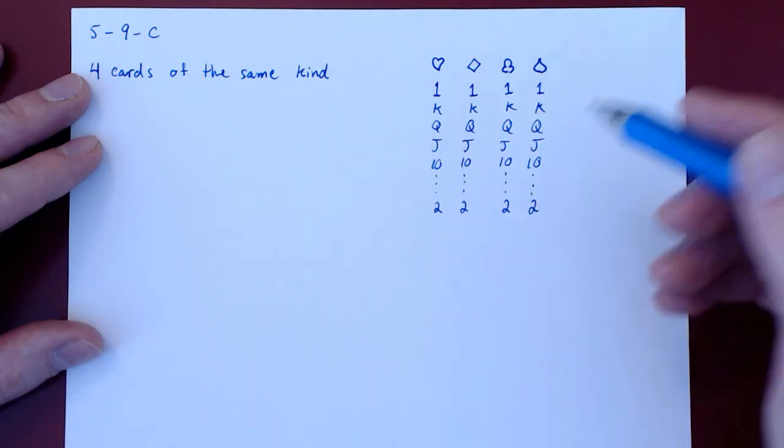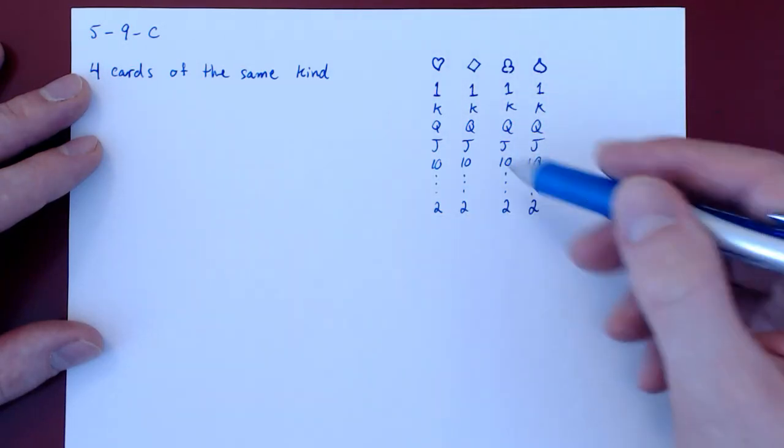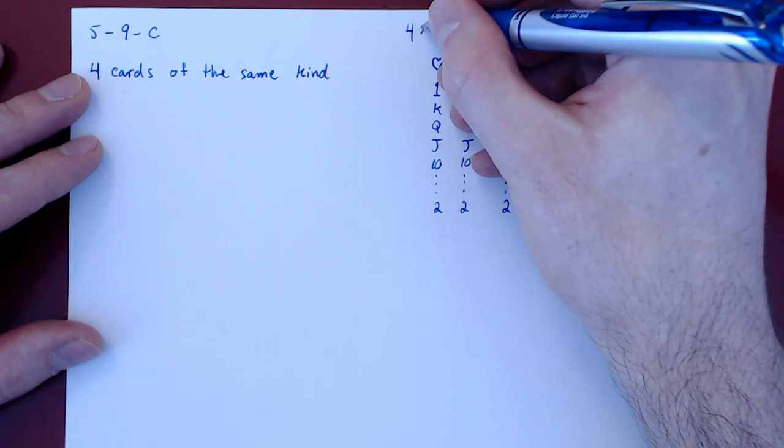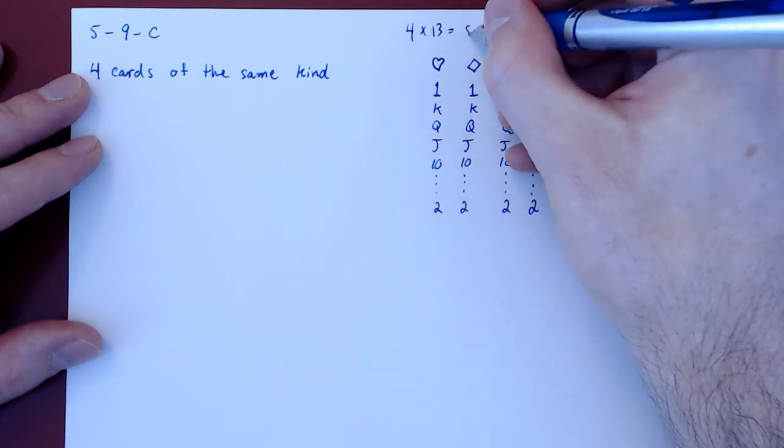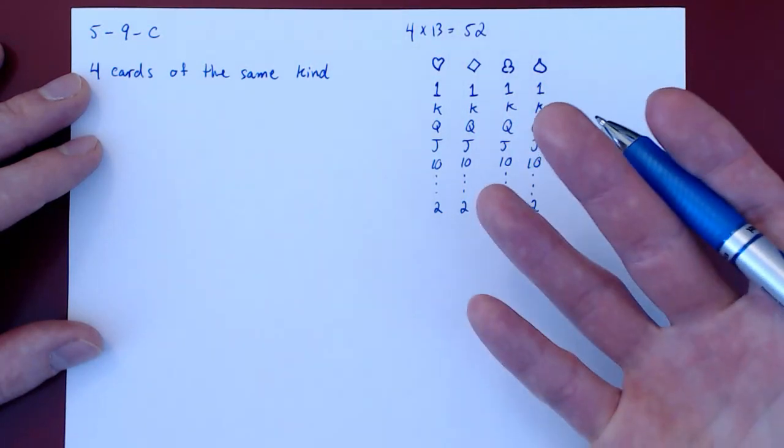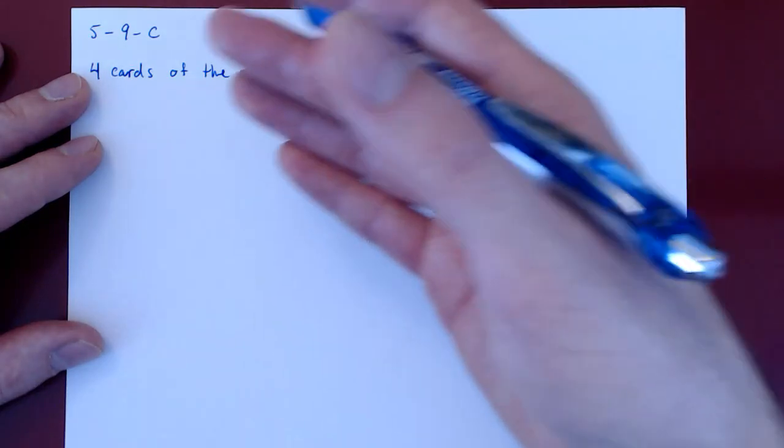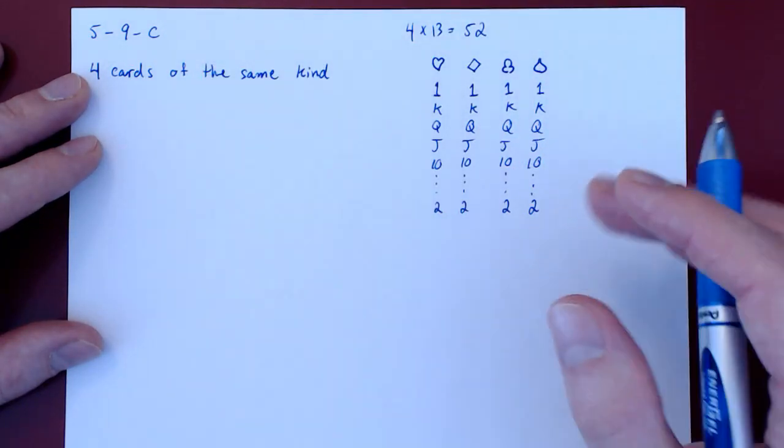And here we're thinking of a hand of poker where the aces are the strongest cards. Of course, there are 4 suits, 13 kinds, so we have a total of 4 times 13, 52 cards to choose from, and here we are being dealt randomly 5 cards out of these 52 cards.